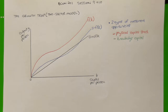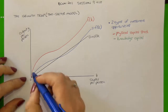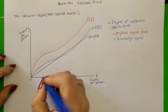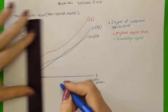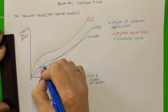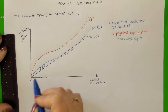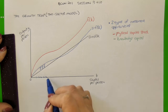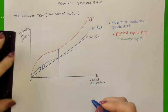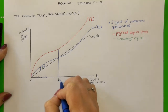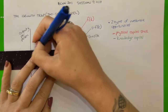The growth trap, or two-sector model, combines two types of investment opportunities: physical capital stock, where there are diminishing marginal returns, and knowledge capital, where there are constant returns. Starting from a level of capital stock below the first steady state equilibrium, savings per person exceeds investment required, so capital per person and output per person increase until a steady state is reached at K-A and output per person Y-A.